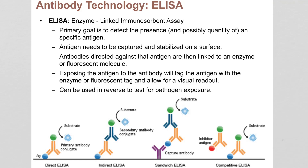The focus of this video is on ways that antibodies are used in lab research, and we're going to talk about three different common techniques: ELISA, Western blots, and immunohistochemistry, or sometimes you'll hear it called fluorescent antibody staining.